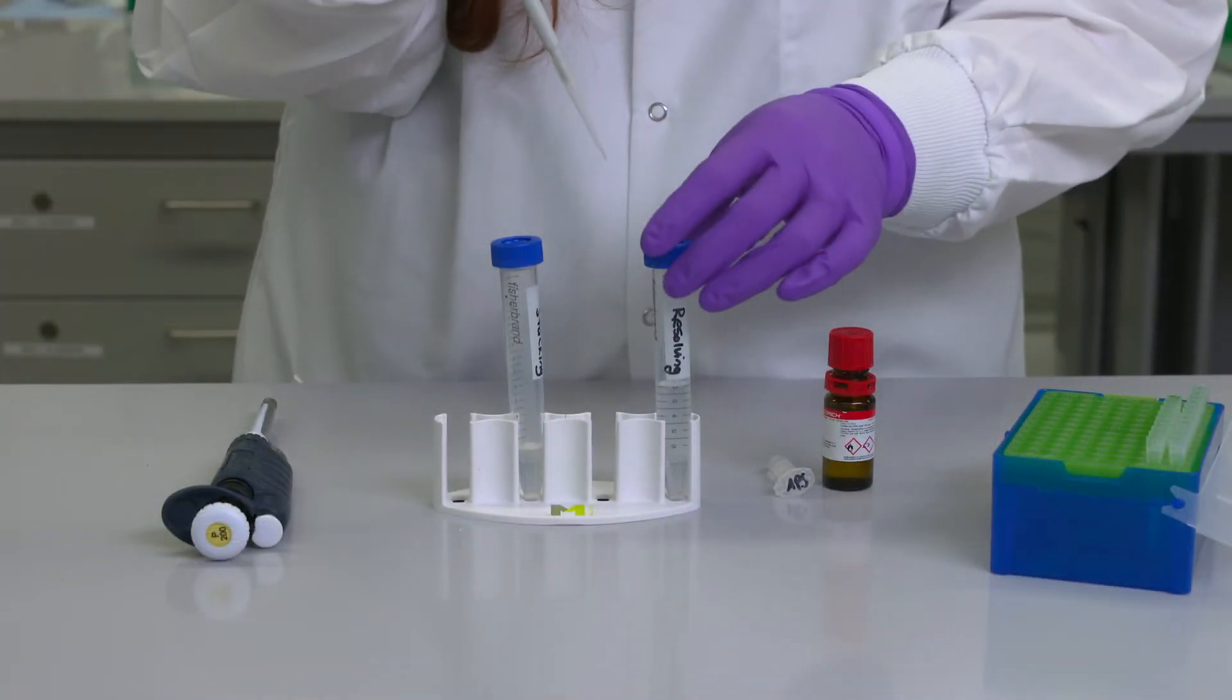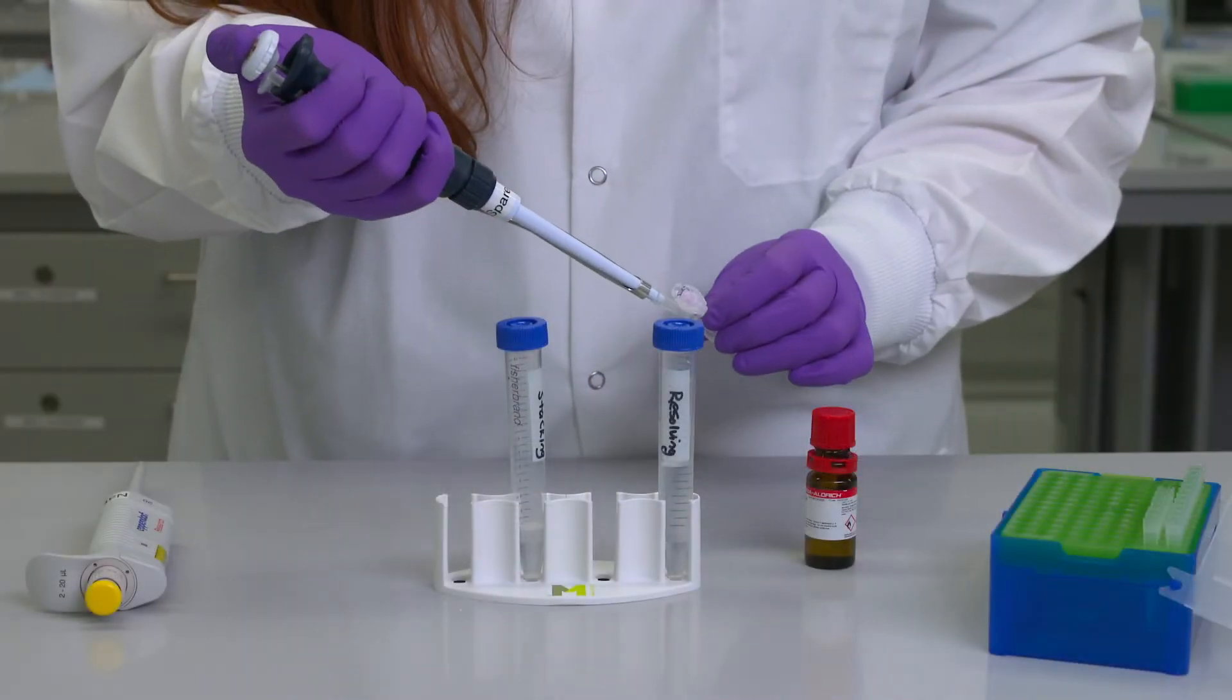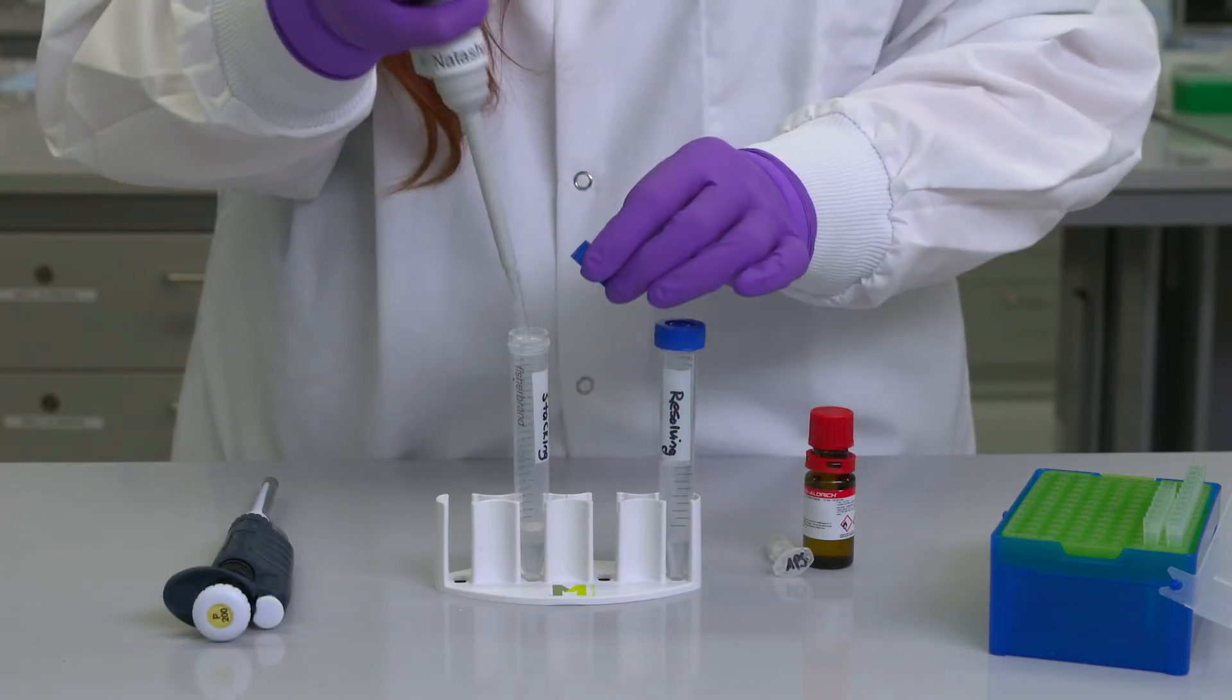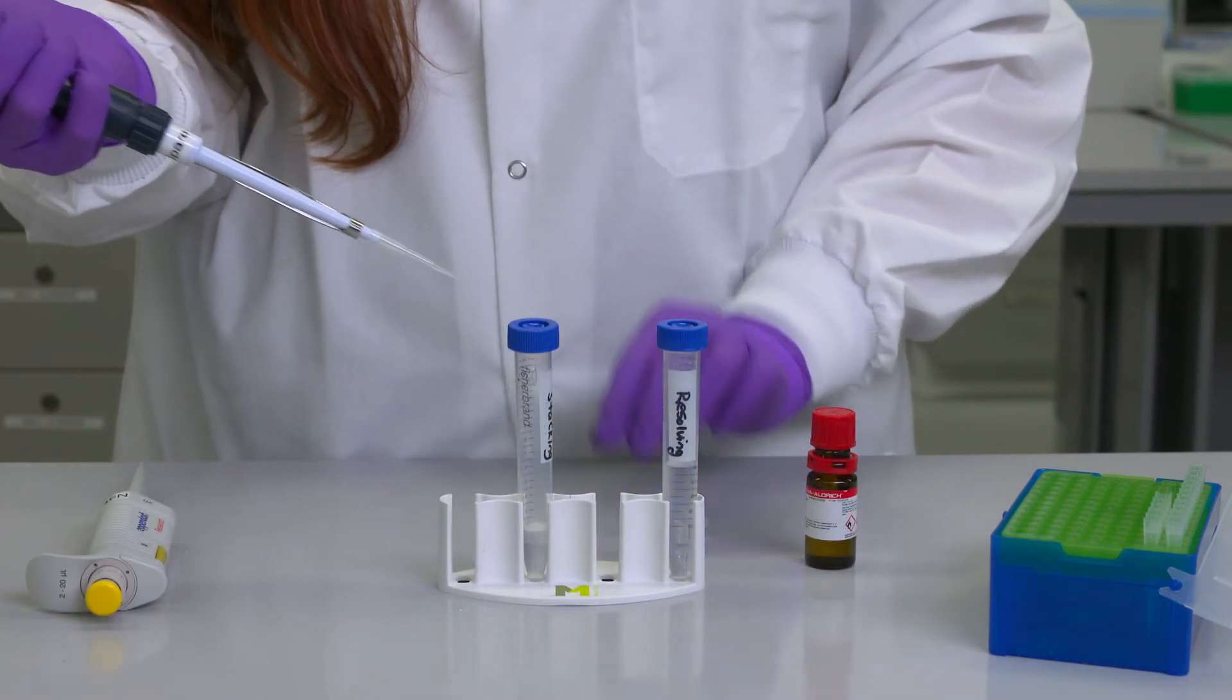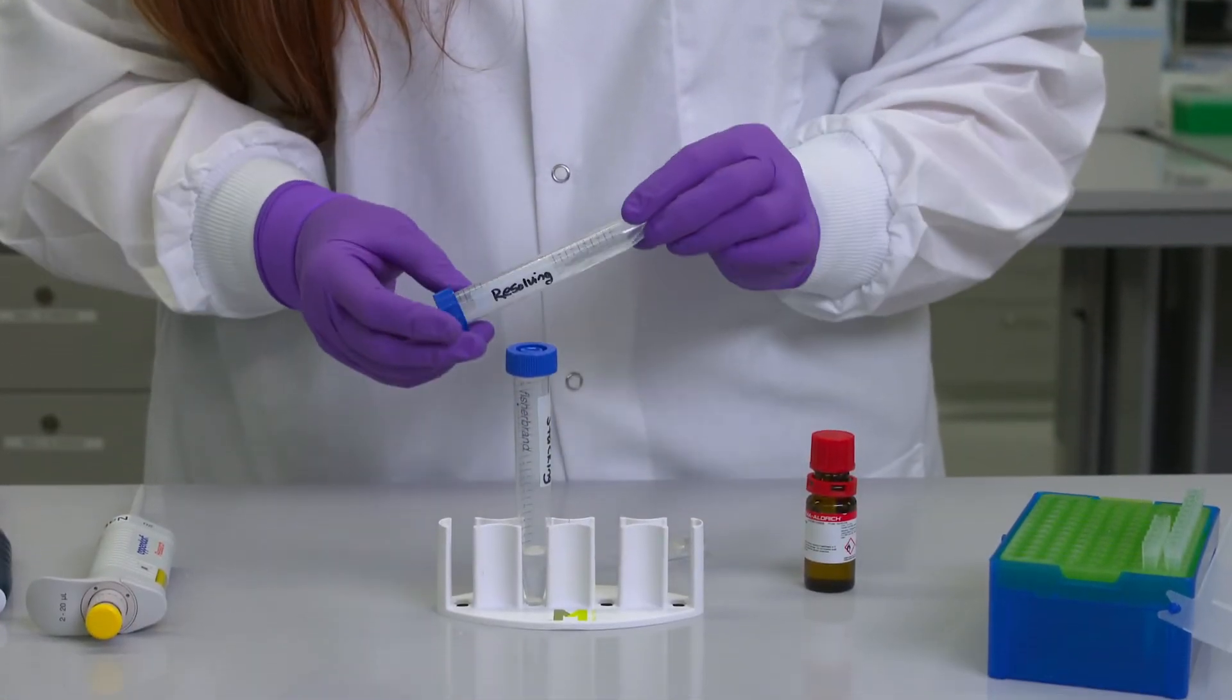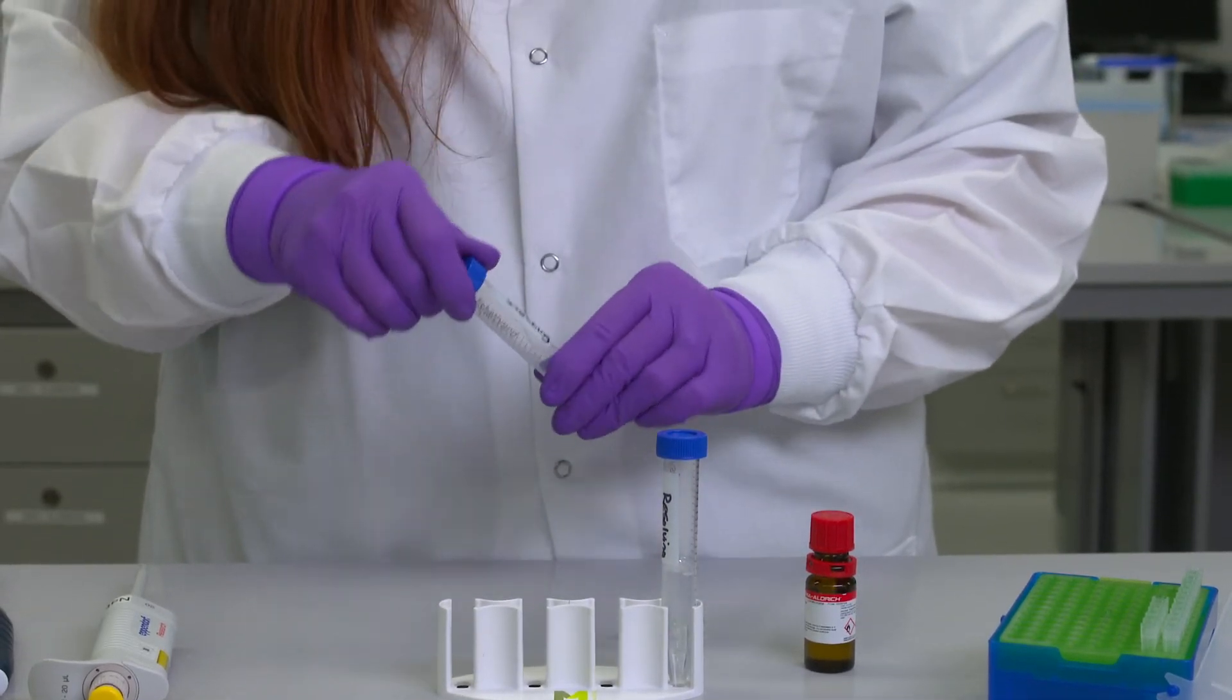Next I'll add 3 microliters of TEMED and 30 microliters of APS to the resolving gel, and then add 2 microliters of TEMED and 20 microliters of APS to the stacking gel and mix both solutions by gently inverting the conicals. Try to avoid introducing air bubbles while mixing.